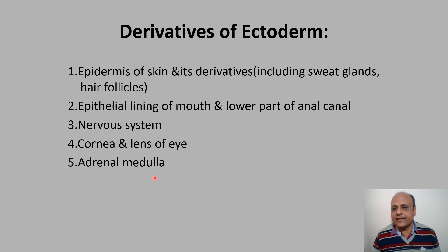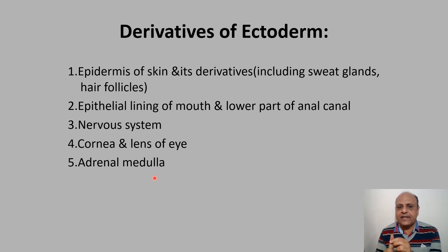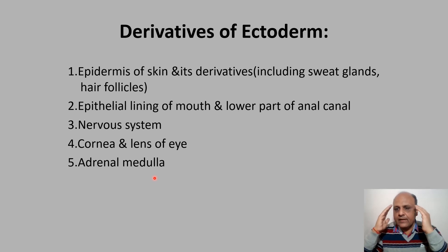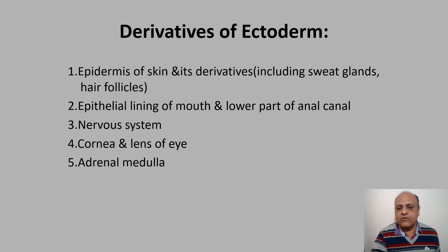The cornea and lens of the eye are derived from ectoderm. The adrenal medulla — the inner part of the adrenal gland — is also derived from ectoderm. So the five derivatives of ectoderm are: epidermis of skin and its derivatives, epithelial lining of the extremities (mouth and lower anal canal), the entire nervous system, cornea and lens of the eye, and adrenal medulla.